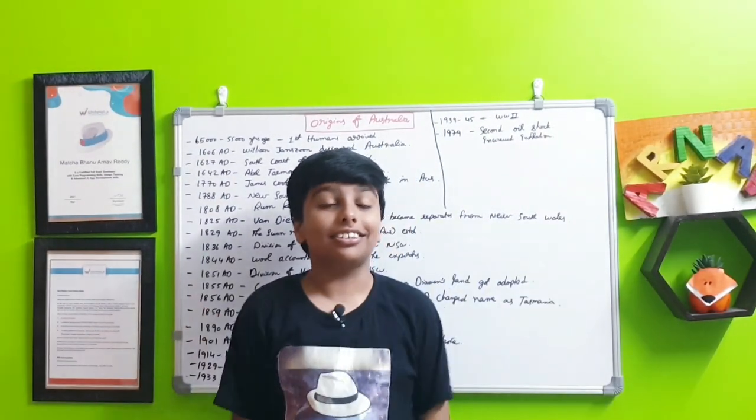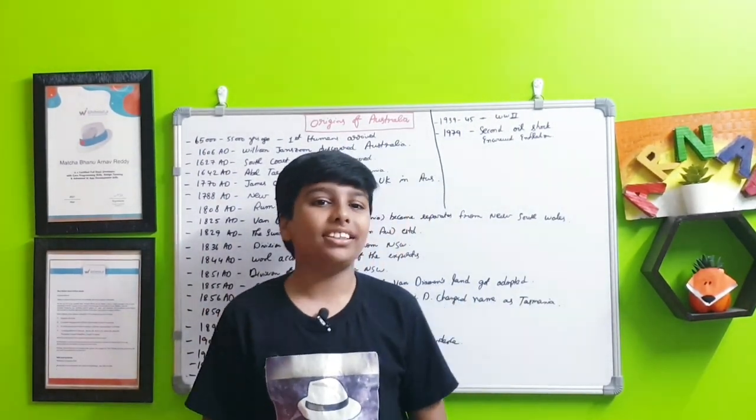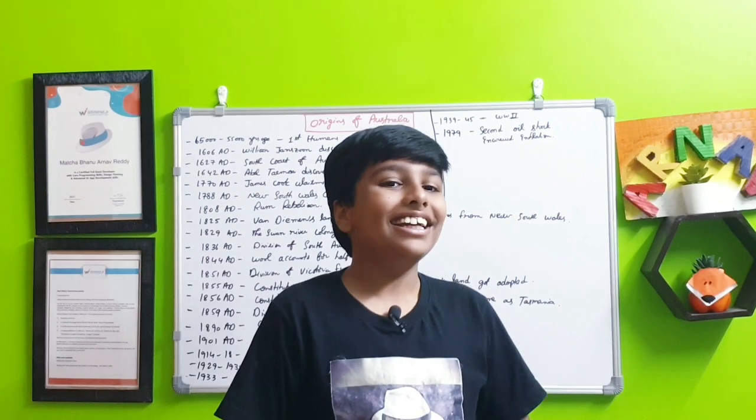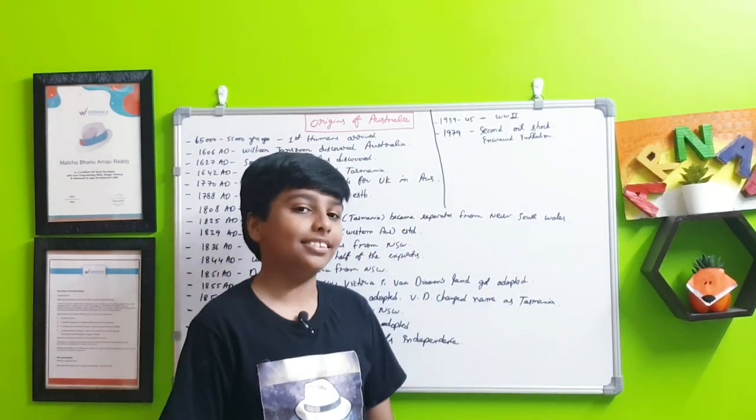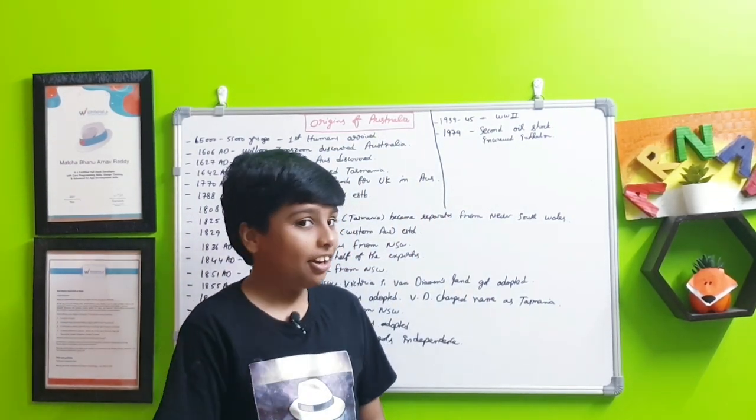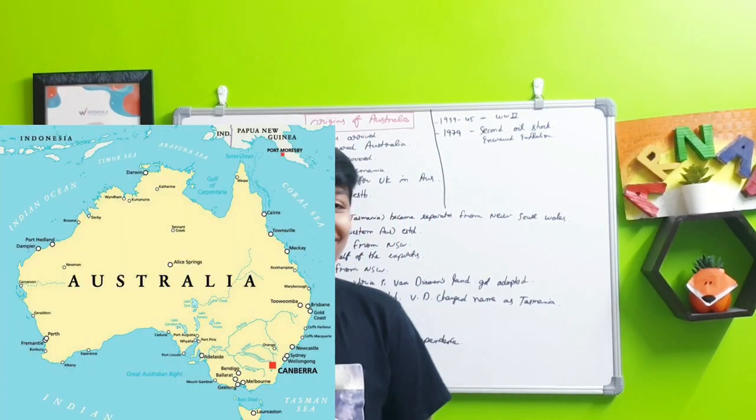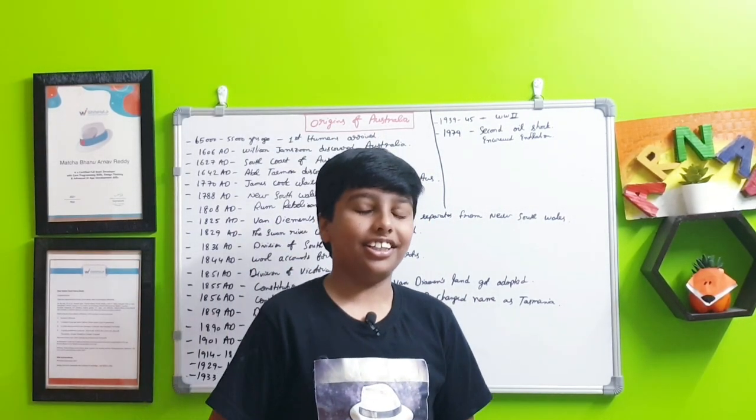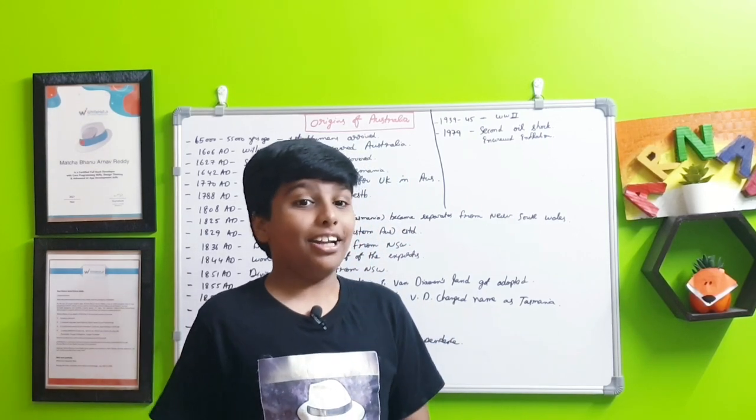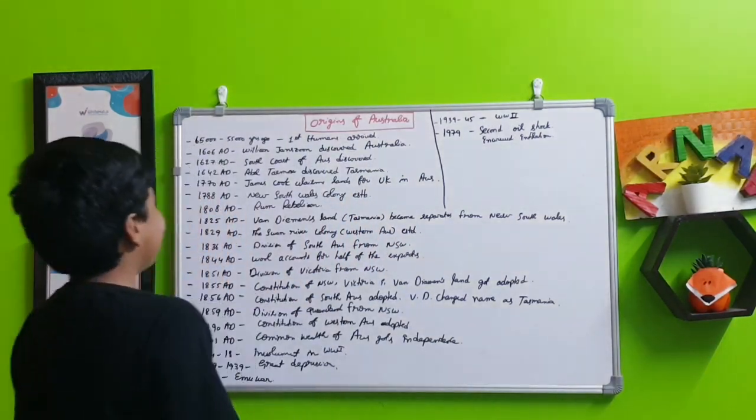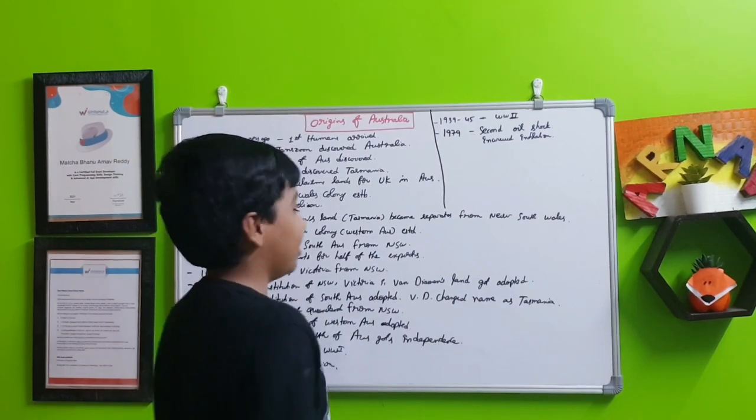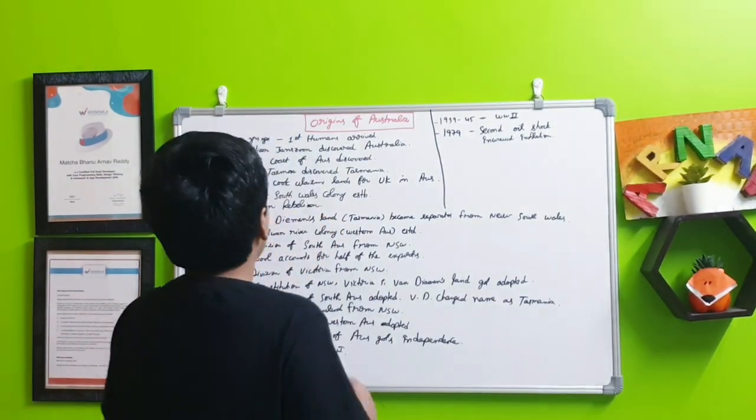Hi friends, welcome to Unsel. Today is the 51st episode in the history series. We're going to discuss the origins of Australia, how it was called, how it got independence and many of those things. Let's start. From 65,000 to 55,000 years ago, the first humans arrived to the continent of Australia.